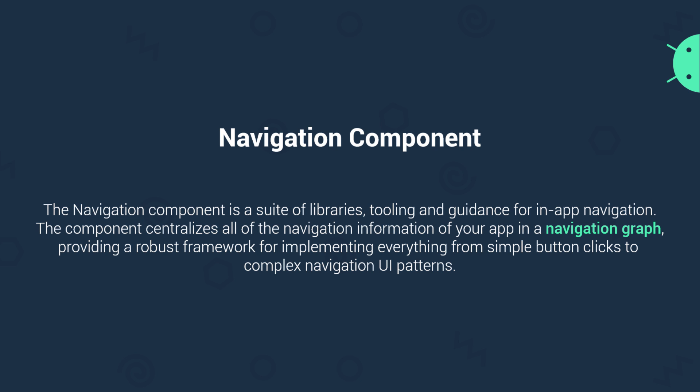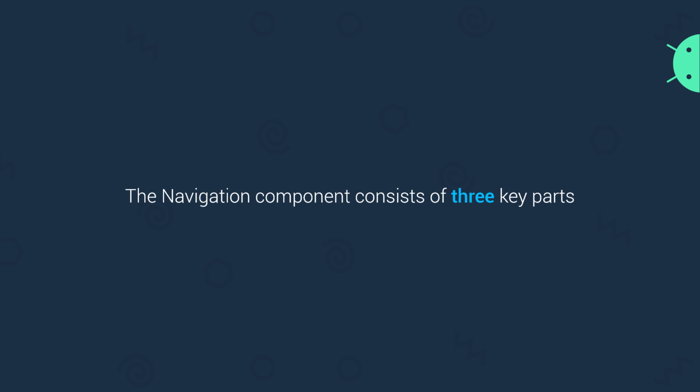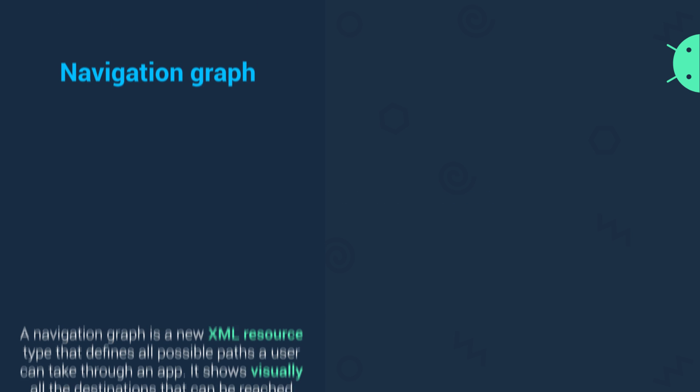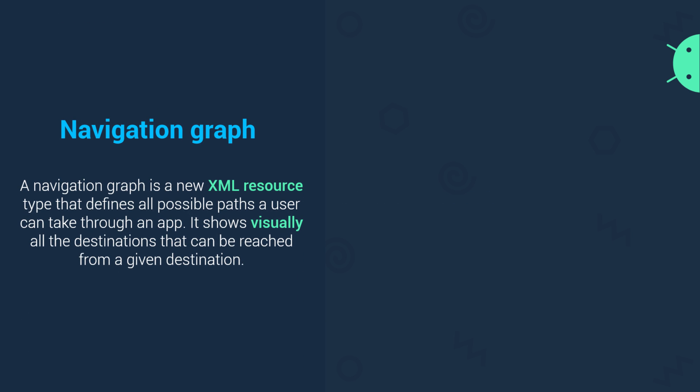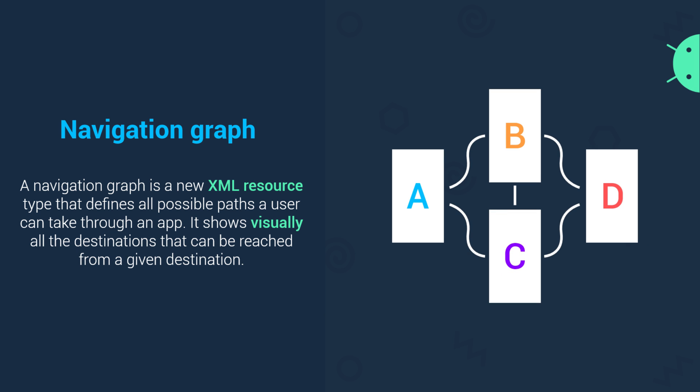Navigation Component consists of three key parts. The first one is a Navigation Graph. A Navigation Graph is a new XML resource type that defines all possible paths a user can take through an app. It shows visually all the destinations that can be reached from a given destination. Basically, a Navigation Graph is an XML resource file where we visually connect all our fragments or activities.